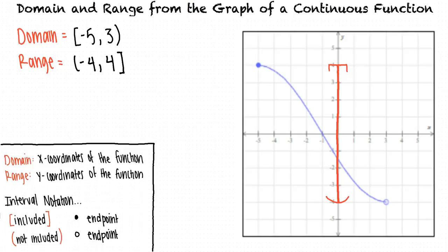To determine the domain and range from the graph of a continuous function, we assess all the x-coordinates and all the y-coordinates included in the function. When writing domain and range in interval notation, we use a bracket to indicate that an endpoint is included in the set of numbers, and we use a parentheses to indicate that an endpoint is not included in the set of numbers.